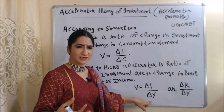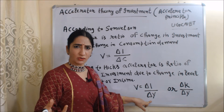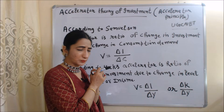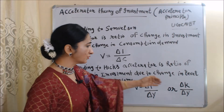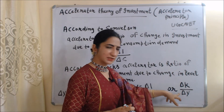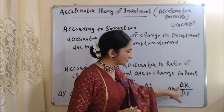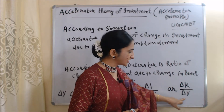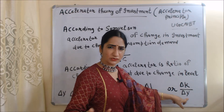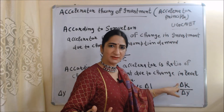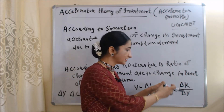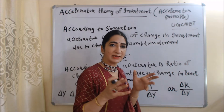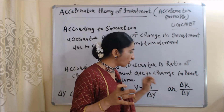The formula for Hicks' accelerator is ΔI / ΔY, where ΔI is change in investment and ΔY is change in income or output. In some books, the formula is written as ΔK / ΔY, where ΔK is change in capital and ΔY is change in output or income. Hicks' accelerator formula also tells us the capital-output ratio — how much capital we use for a particular amount of output.